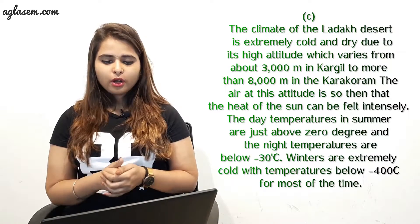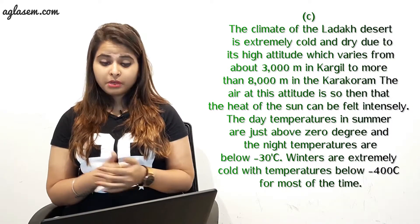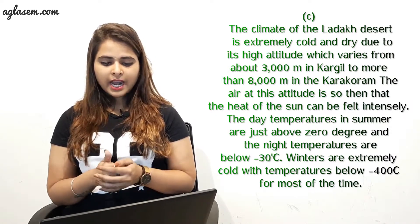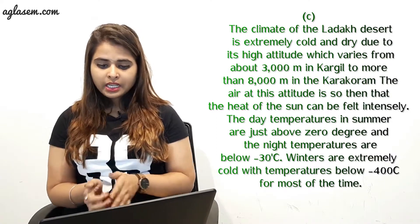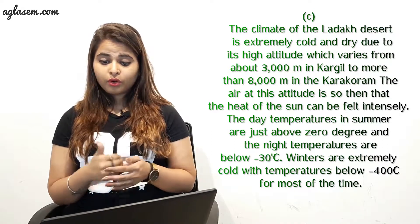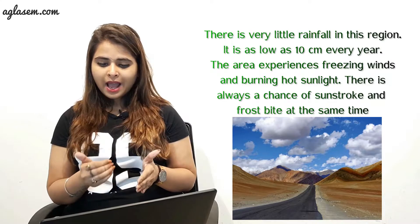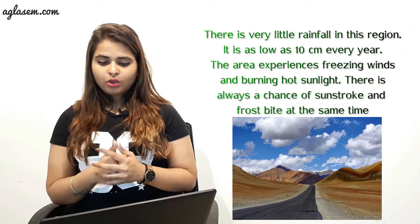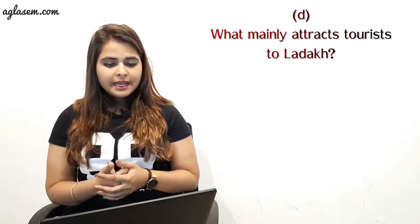Part C — what are the climatic conditions of the Ladakh desert? The climate of the Ladakh desert is extremely cold and dry due to its high altitude, which varies from about 3000 meters in Kargil to more than 8000 meters in the Karakoram. The air at this altitude is so thin that the heat of the sun can be felt intensely. Day temperatures in summer are just above zero degrees and night temperatures are below minus 30 degrees Celsius. Winters are extremely cold with temperatures below minus 40 degrees Celsius for most of the time. There is very little rainfall, as low as 10 centimeters every year. The area experiences freezing winds and burning hot sunlight, with chances of sunstroke and frostbite.